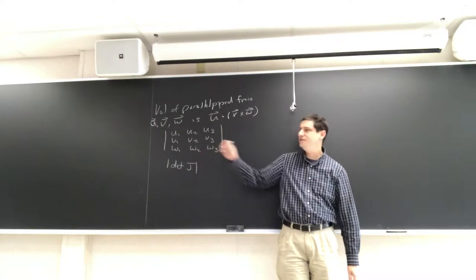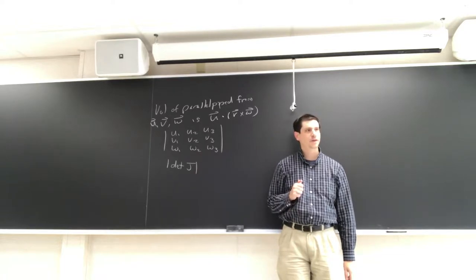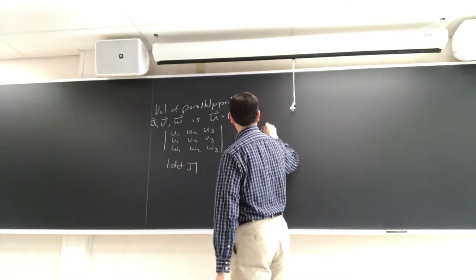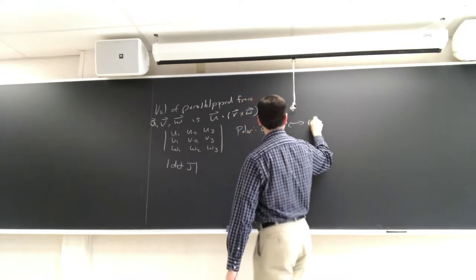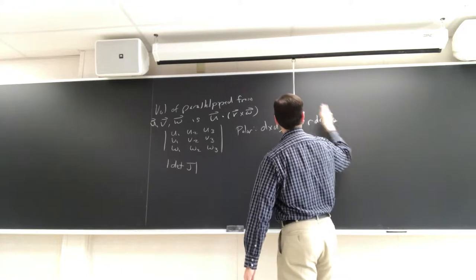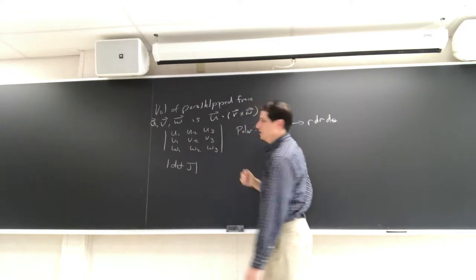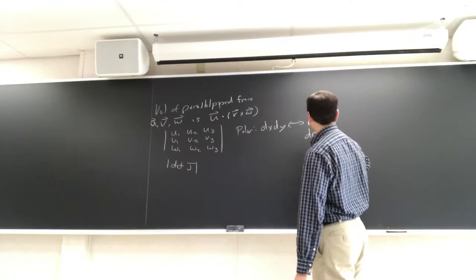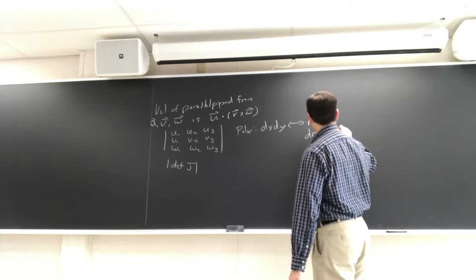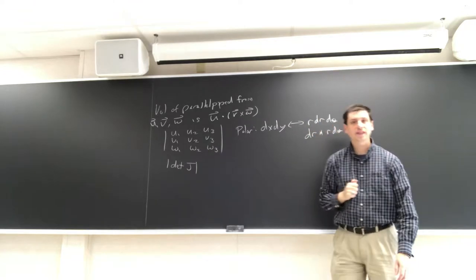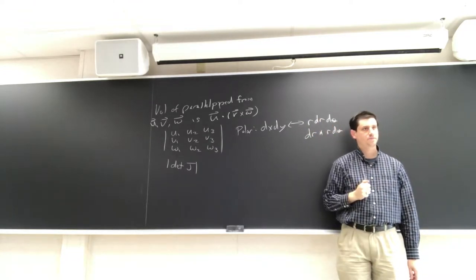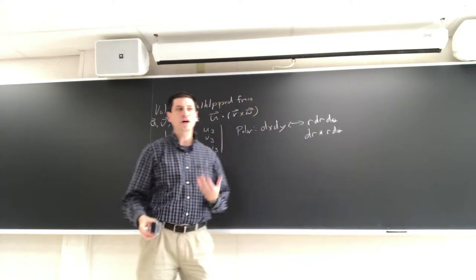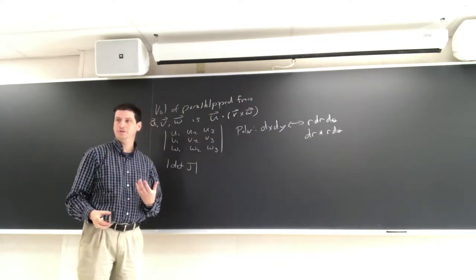In polar coordinates, dx dy goes with r dr dθ. We should really view this as dr times r dθ — two lengths. That's the general setup. What we want to do now is figure out what we should do for spherical coordinates.